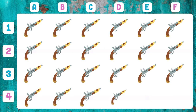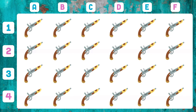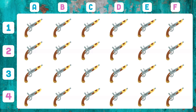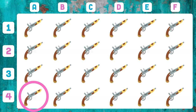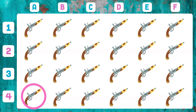Which of these weapons do you see as different from the rest? The weapon that appears in 4A — it is missing pieces that the other weapons have.